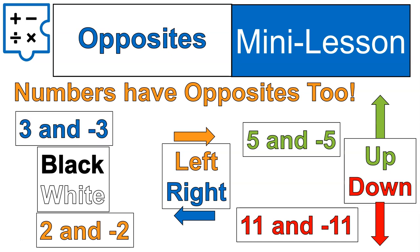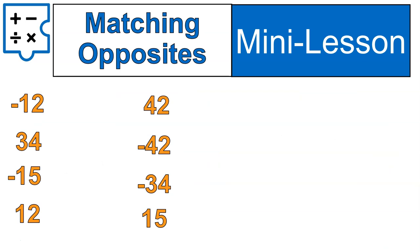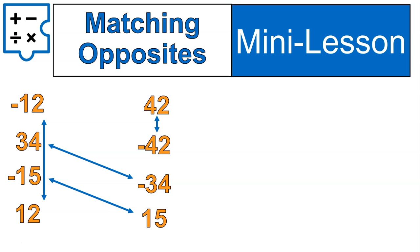Do you see a pattern? 3 and negative 3. Let's see if you've figured out the pattern. Let's try and match some of these numbers with their opposites. Go ahead and try it out — pause the recording and come back. Welcome back. 34 is the opposite of negative 34. 15 is the opposite of negative 15. We also have 42 and negative 42, and 12 and negative 12. Mr. Buffington is super tricky and sometimes mean.